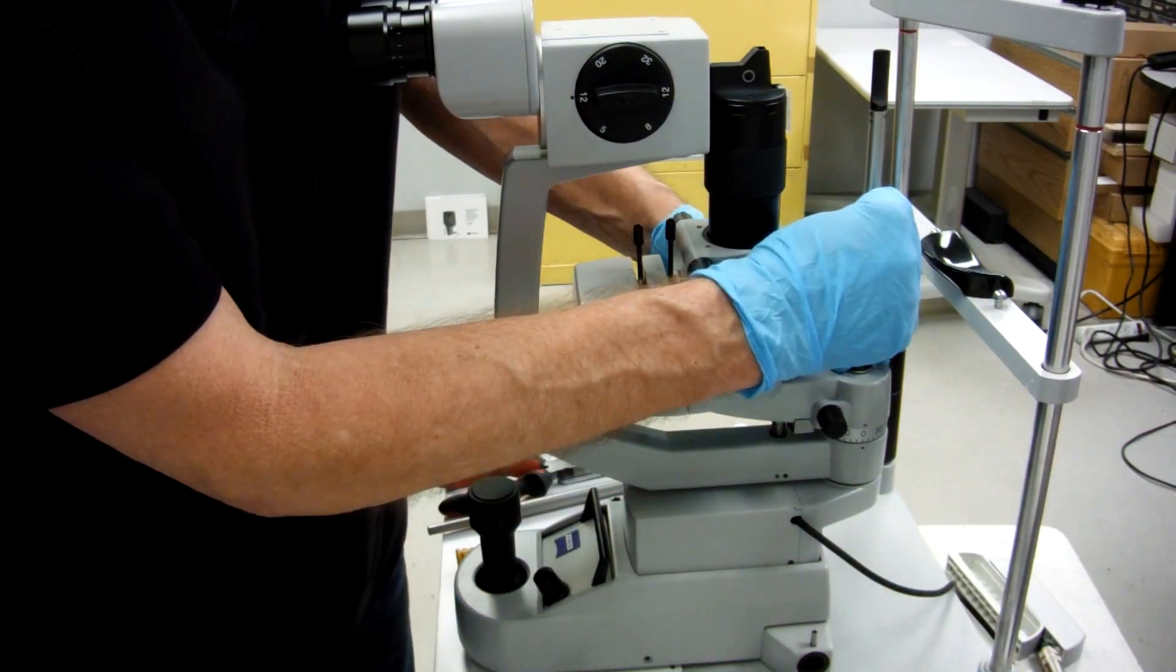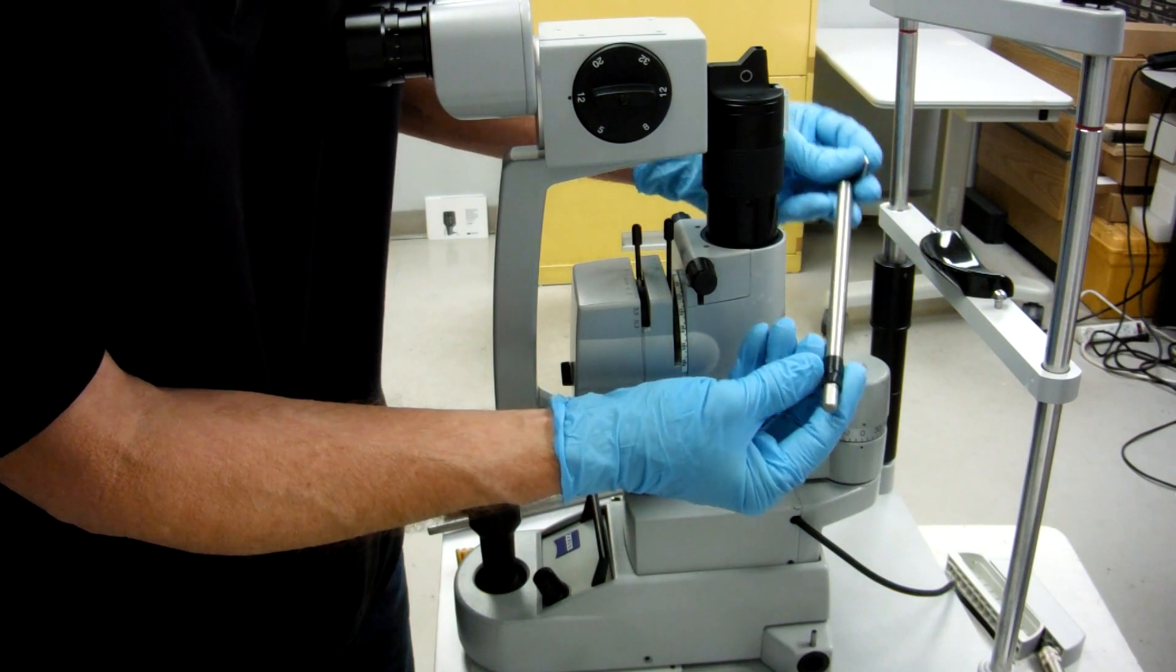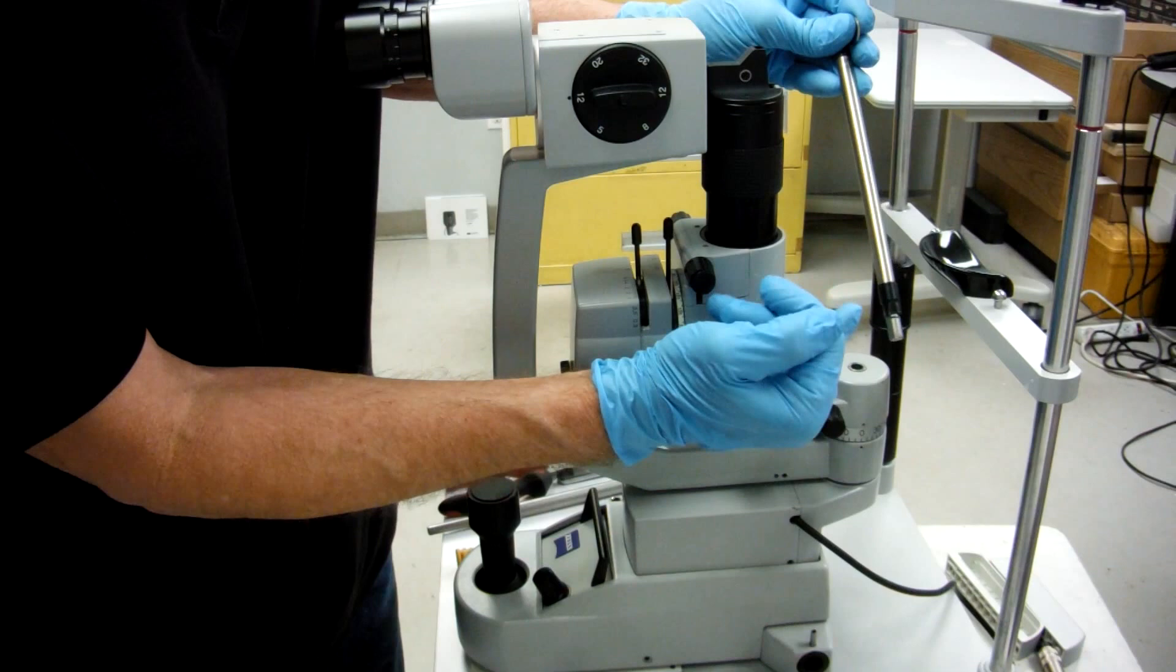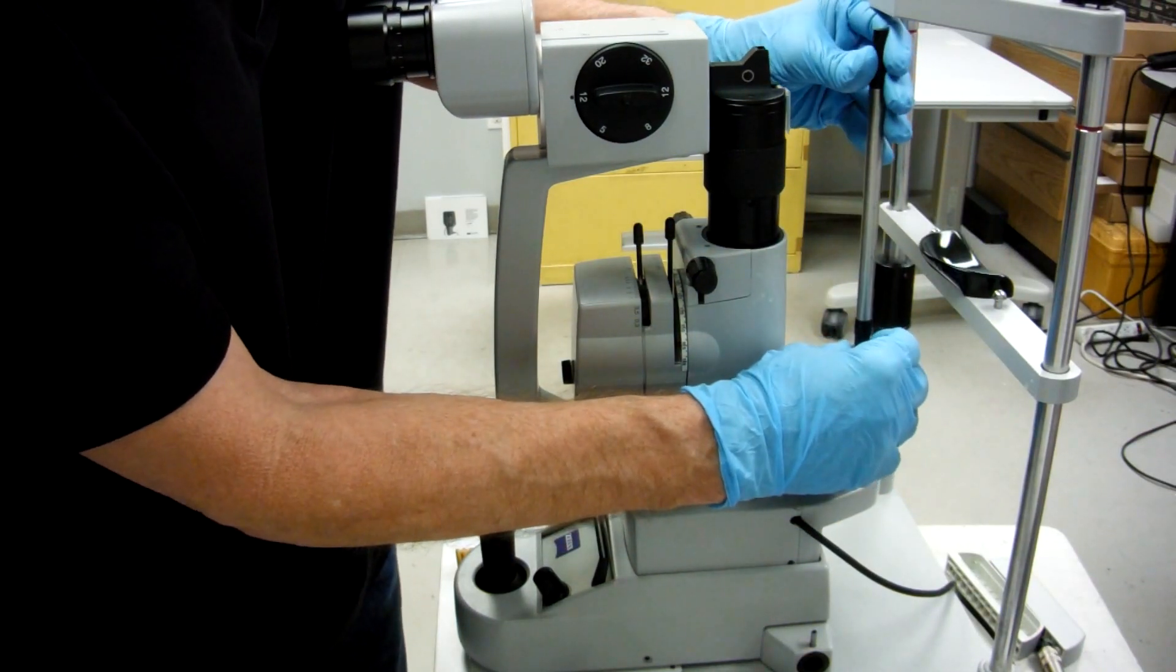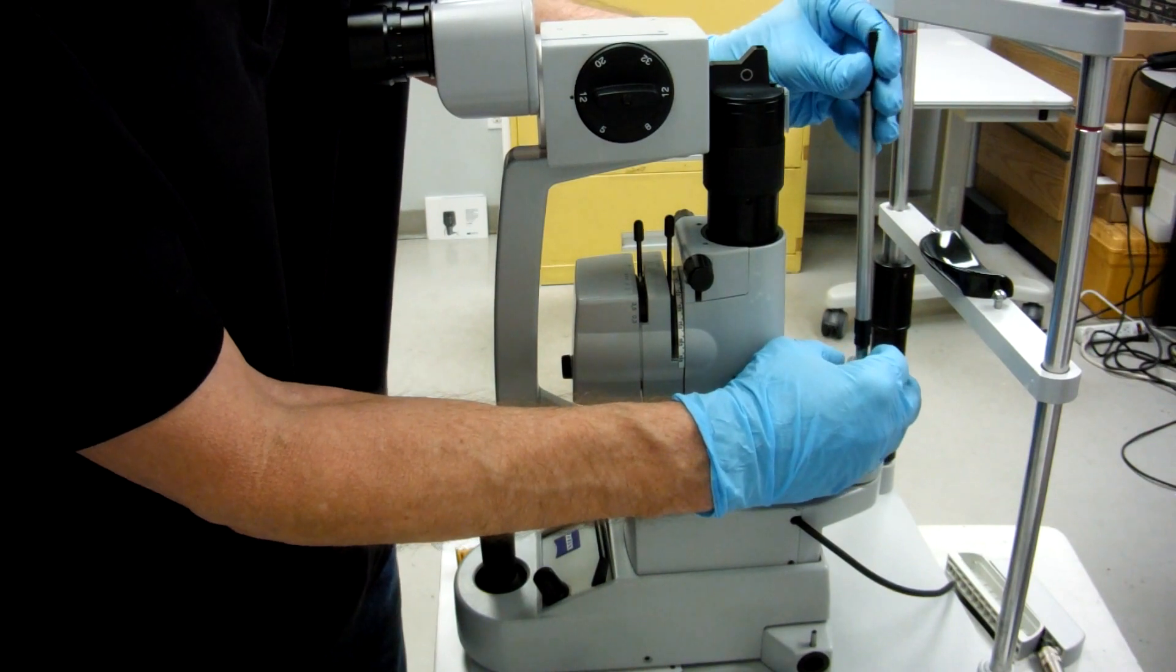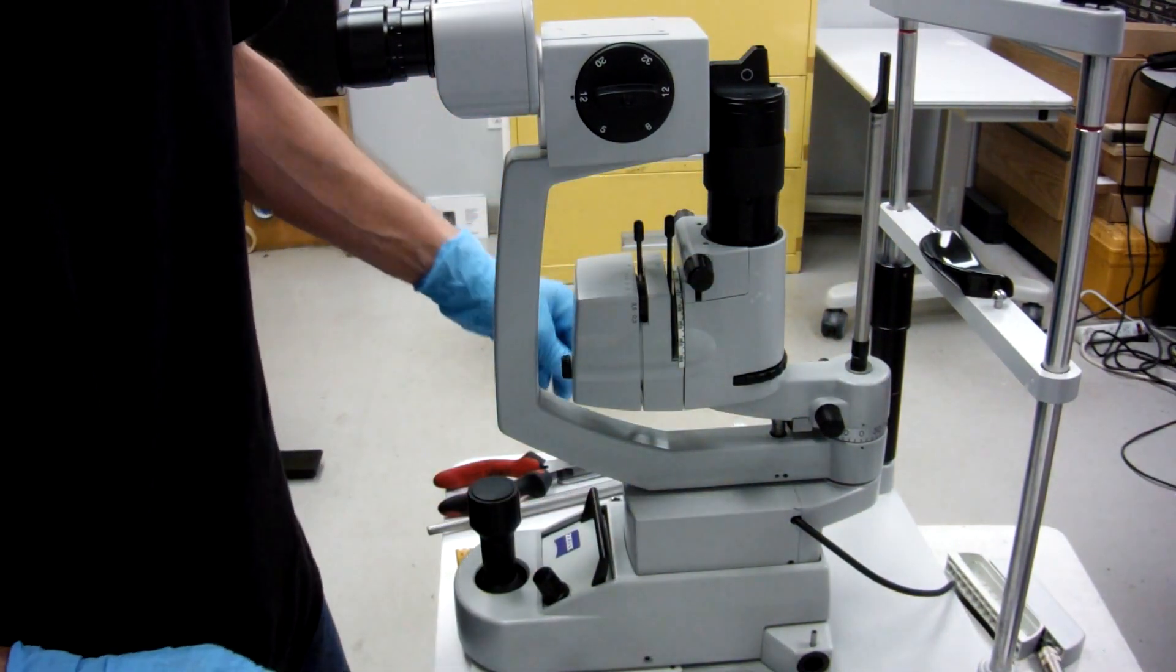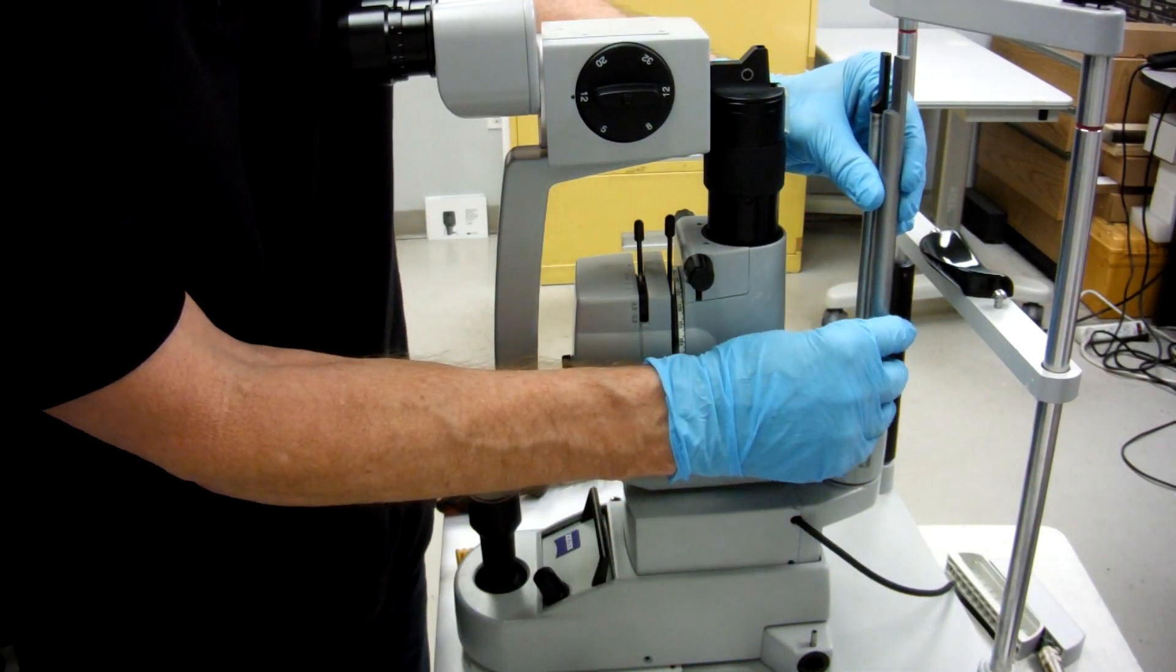You can make your own by getting your regular focus rod, putting some tape about three-eighths of an inch below where it normally rests, and it won't go down as far. Then it'll be as high as you need to be able to see your light.